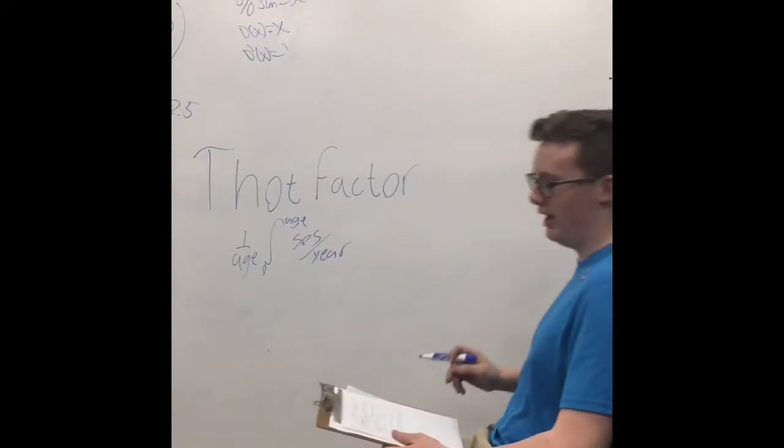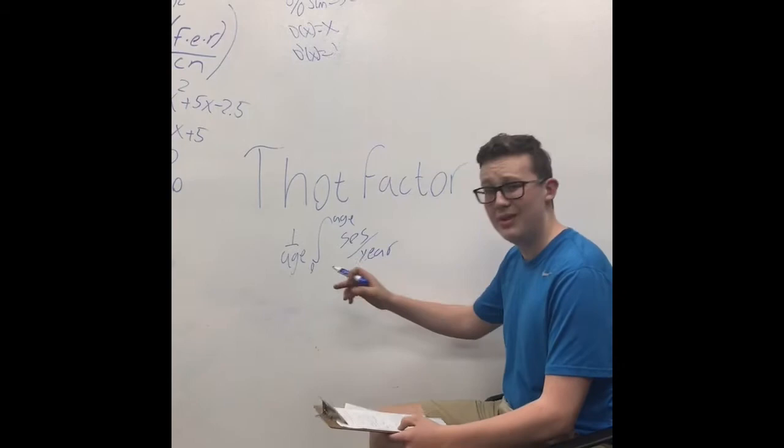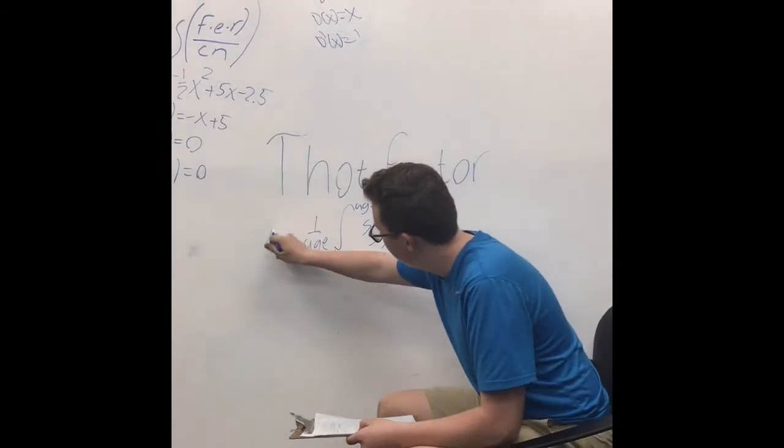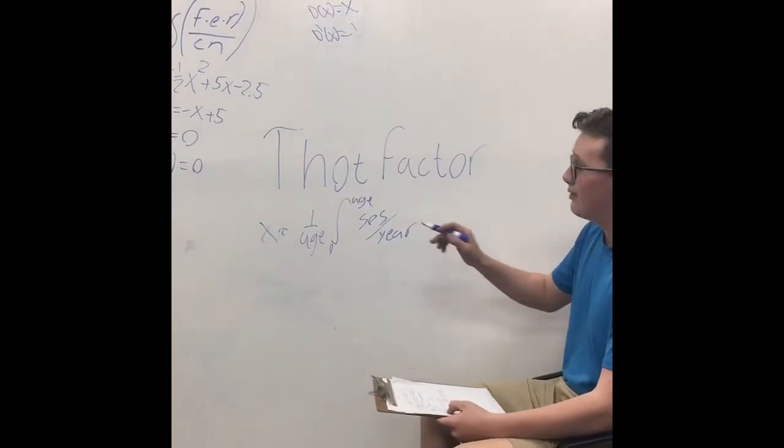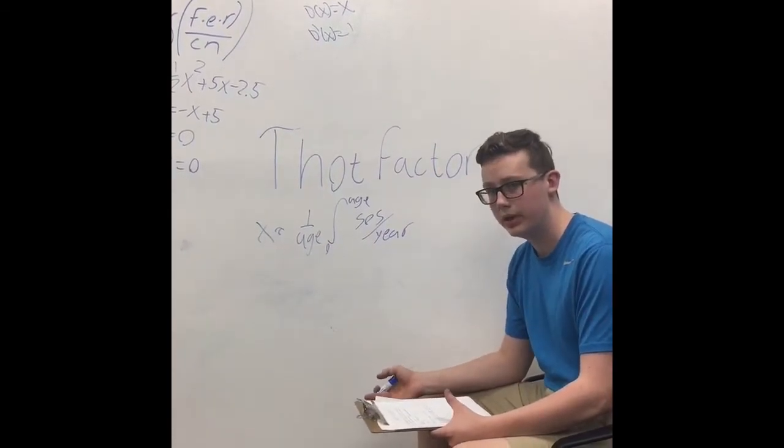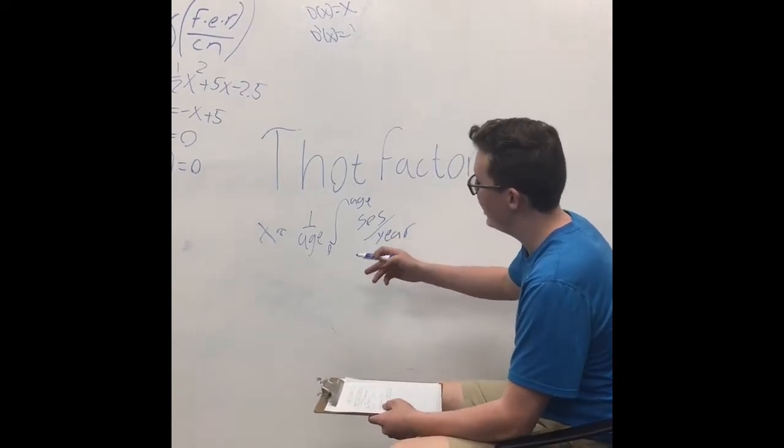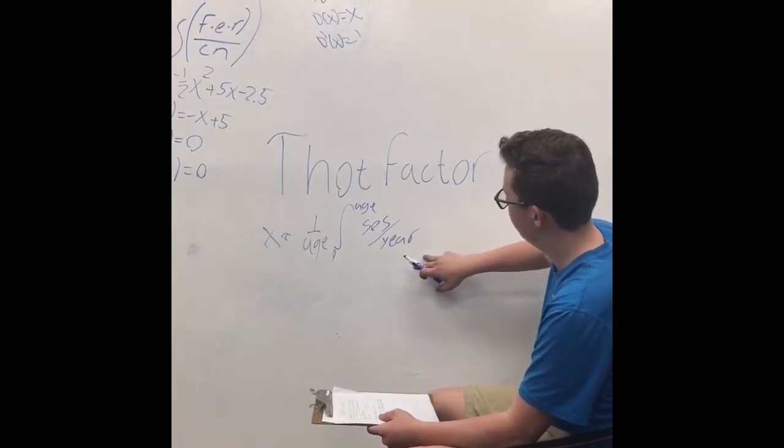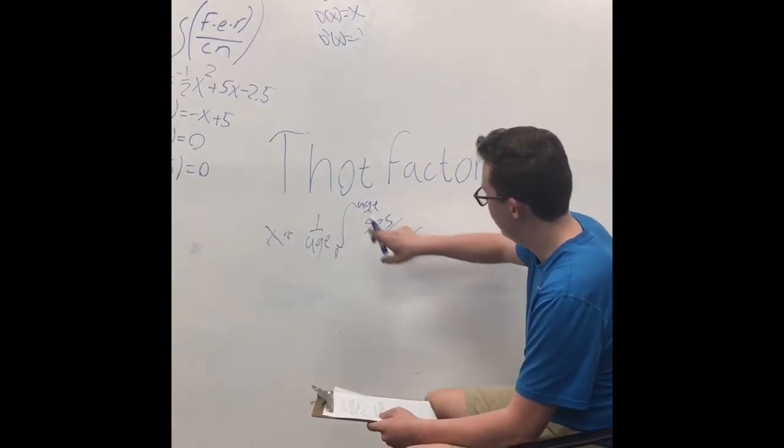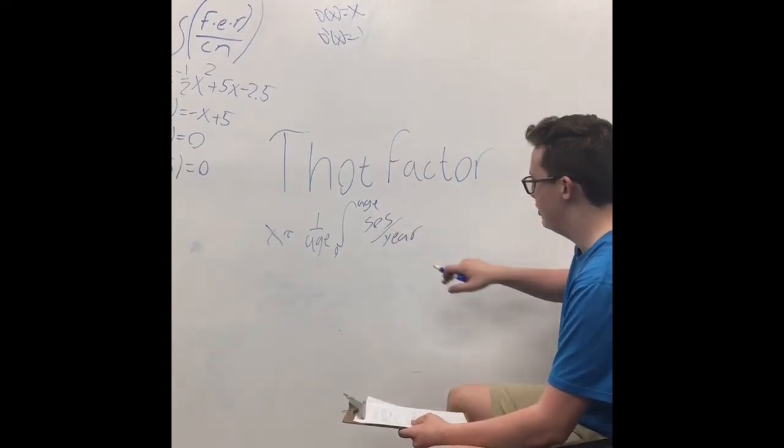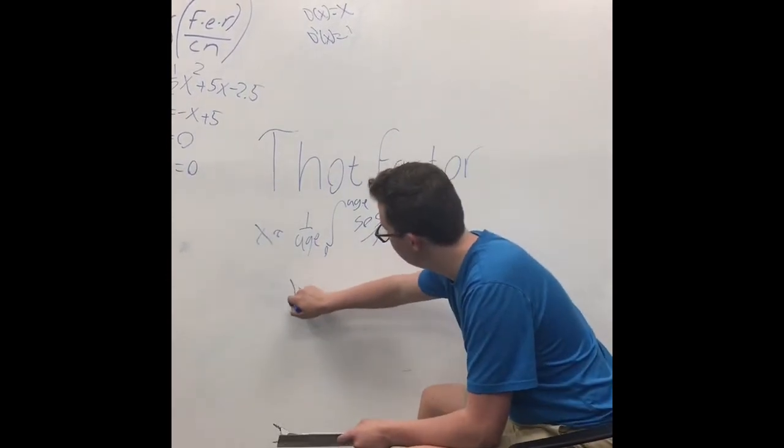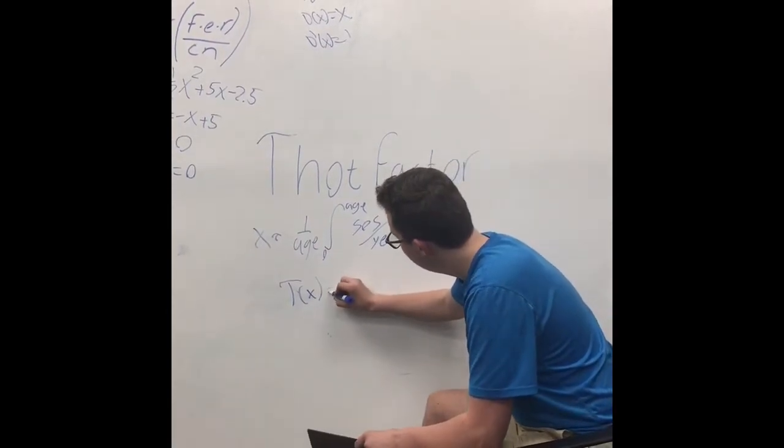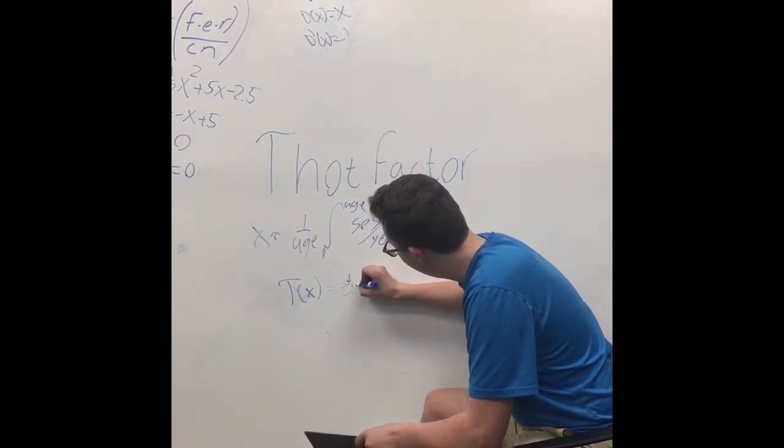This is thought factor. Thought factor is the measure of how much of a thot your waifu is. So your x value is composed of the average husbandos per year, inversely with her chances for abandon displayed by this equation right here: 1 over h is the integral from 0 to h of the significant others per year. Now that can be put into the thought equation, which is t of x equals e to the one half of x.